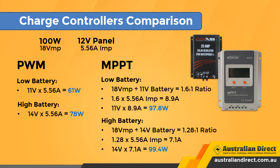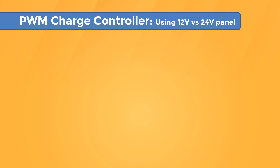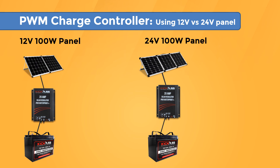If we do that same math for a fuller battery at 14 volts, the in-versus-out ratio works out to 1.28, so that increases the current from 5.56 amps to 7.1 amps. Multiply that times 14 volts and that equals 99.4 watts. So let's compare those two outputs with the same battery and same panel — just going from a PWM to an MPPT charge controller — you've seen how an MPPT charge controller can maximise the output when the solar panel's nominal voltage matches the battery bank's nominal voltage.